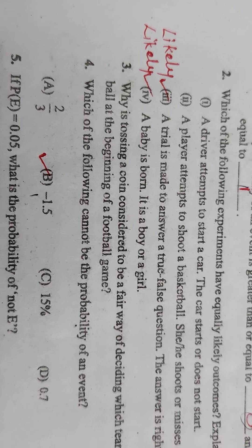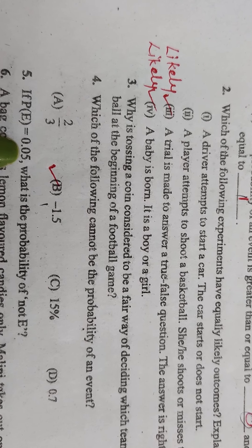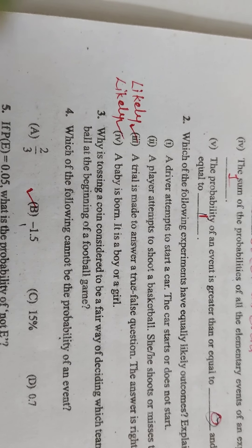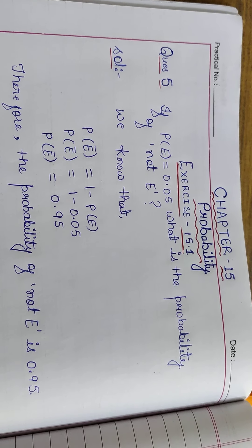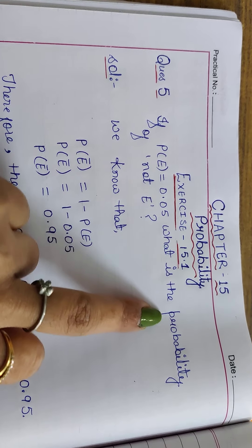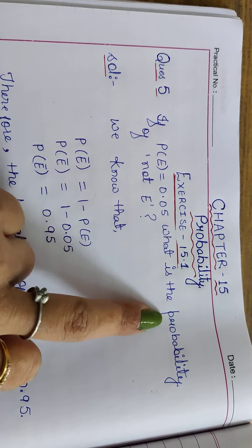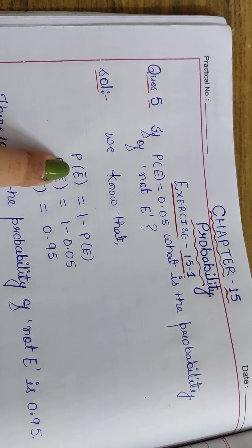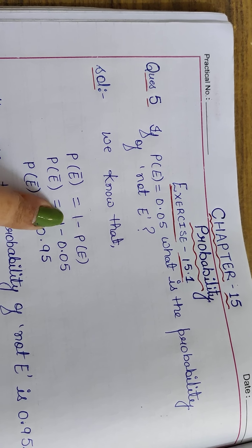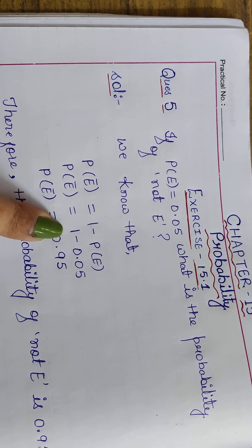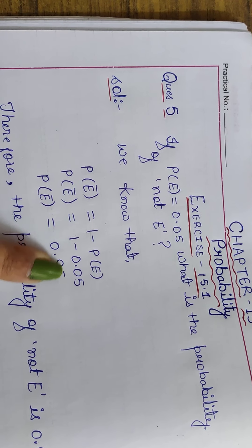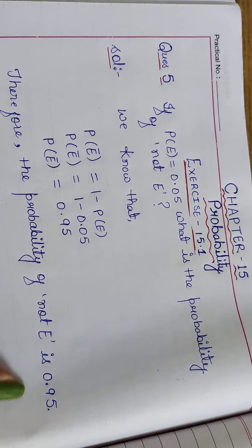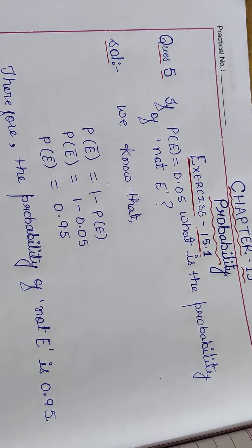Question number 5: If P(E) is equal to 0.05, what is the probability of not-E? We know the formula: P(not-E) equals 1 minus P(E). So P(not-E) equals 1 minus 0.05, which gives us 0.95. Therefore the probability of not-E is 0.95.